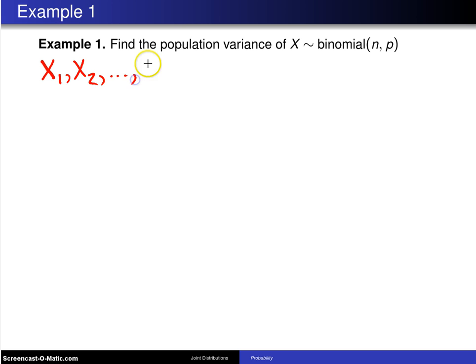X1 up to Xn are assumed to be mutually independent and identically distributed Bernoulli random variables with a common parameter P. So the probability of success on each trial is P.